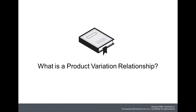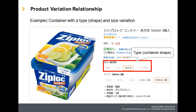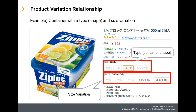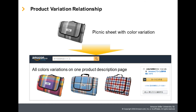What is a product variation relationship? The product variation relationships feature allows you to group products of multiple sizes, colors, or other types of variations on a single detail page. The example shown here has a container type variation and a size variation. Customers love variety. Creating variations lets them see all their buying options together on one page and can help increase conversion.